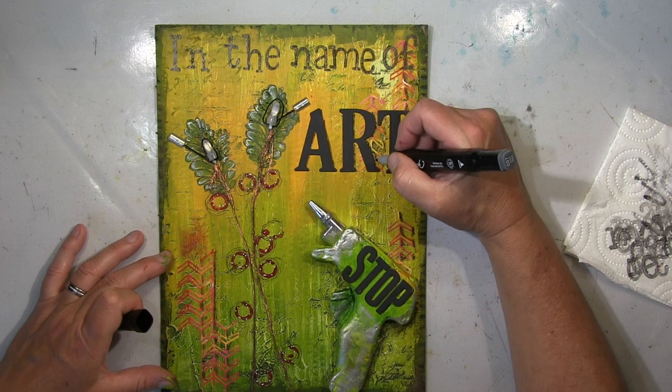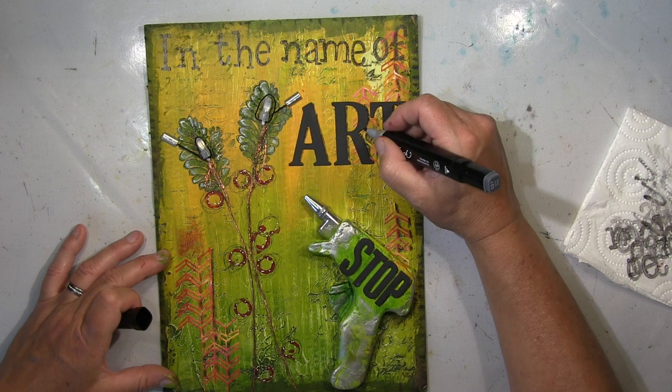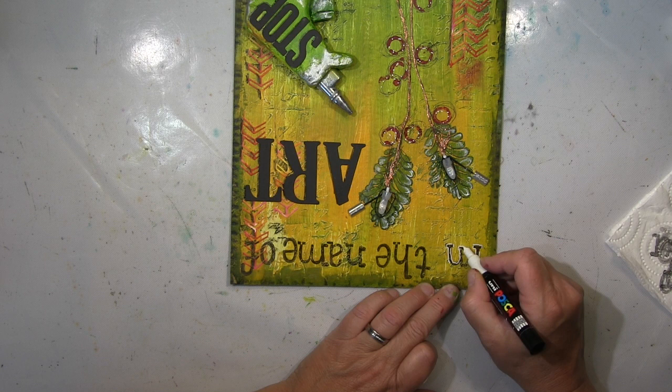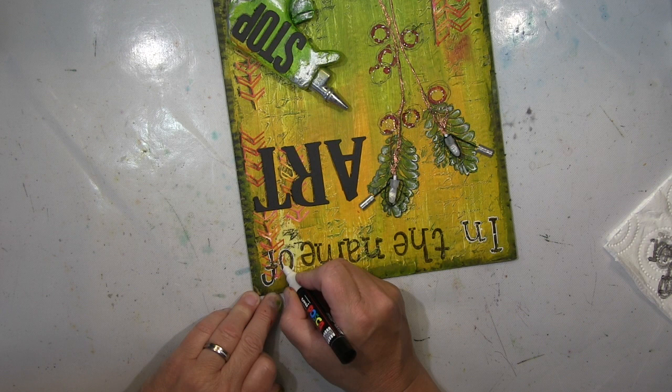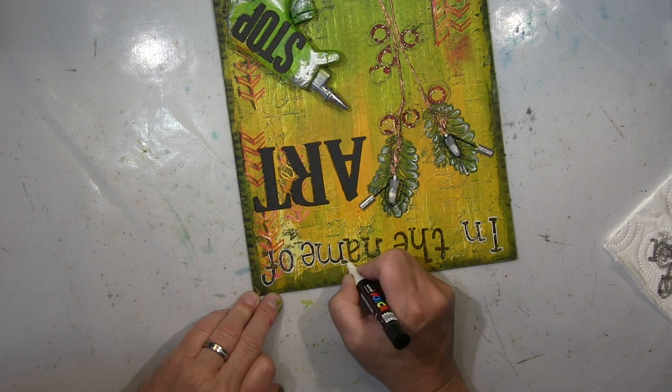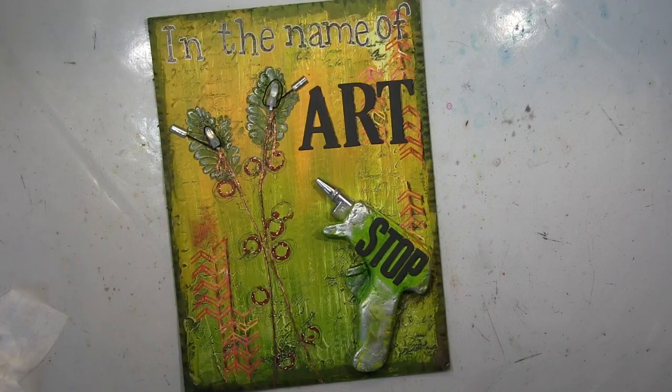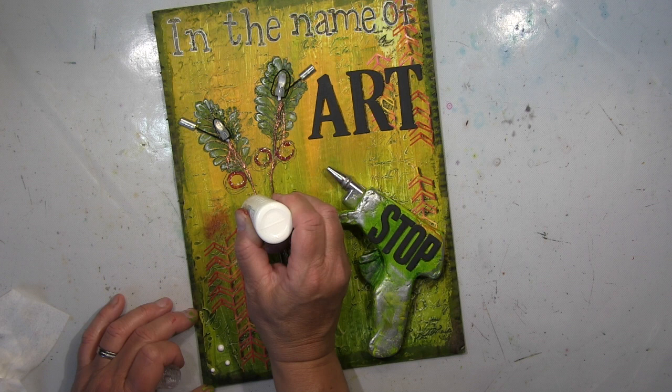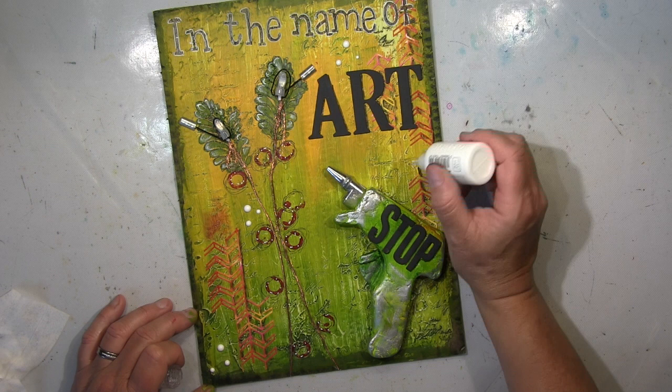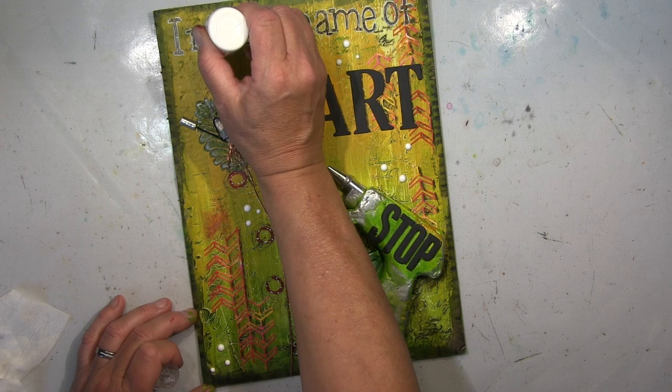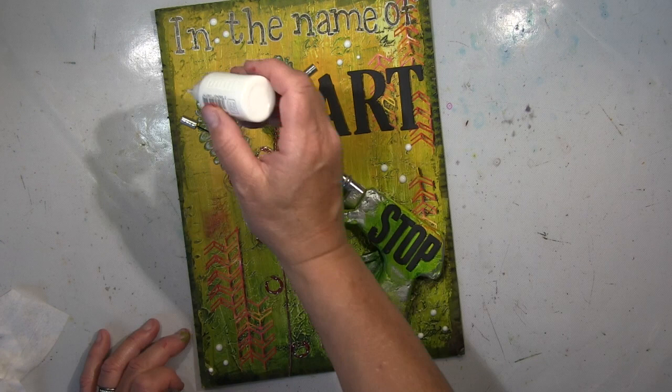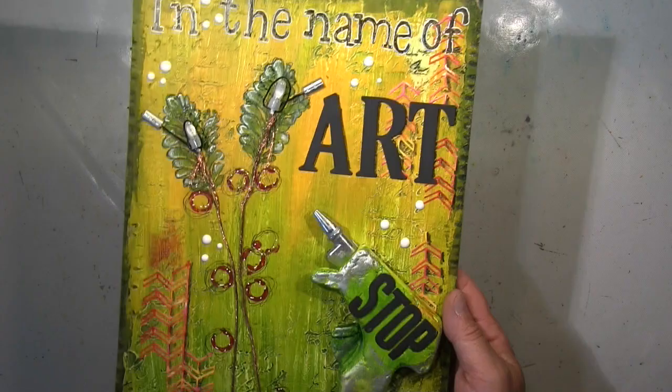Going on with shading here with my alcohol marker in grey. I'm using the white Posca here around the black letters - I think that makes them stand out even more. A few white dots here and there with a pearl maker, and I'll do the edge. That's it, I'll show you the close up.